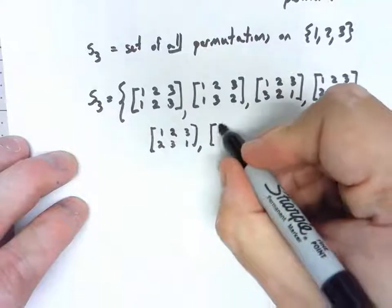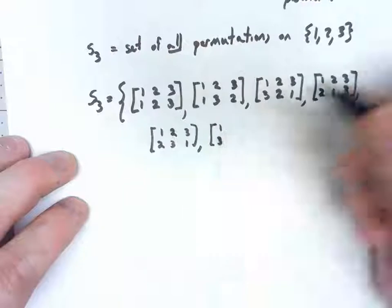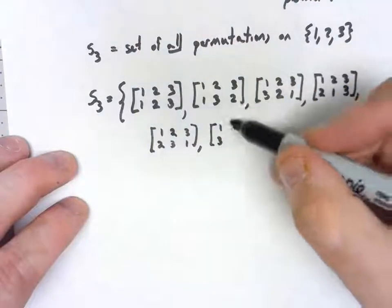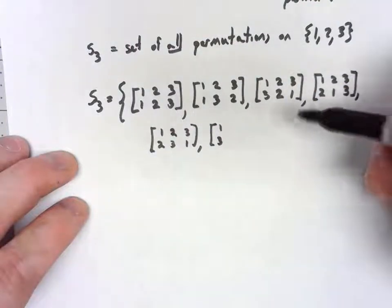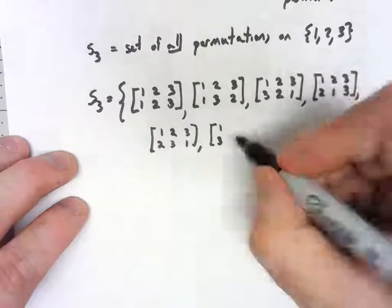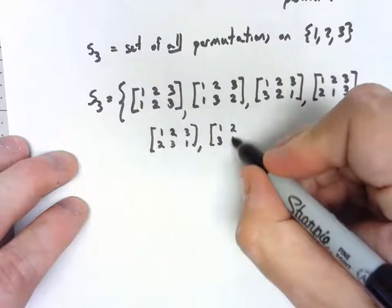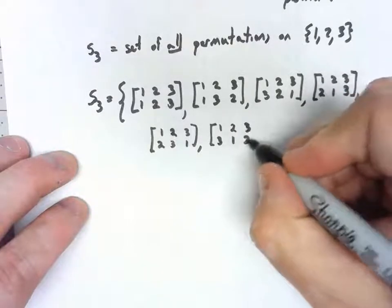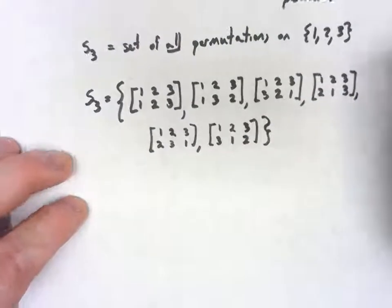If on the other hand 1 went to 3, again 2 can't go to 2, because that would be something fixed. So 2 would have to go to 1, 3 would have to go to 2, and there we go.